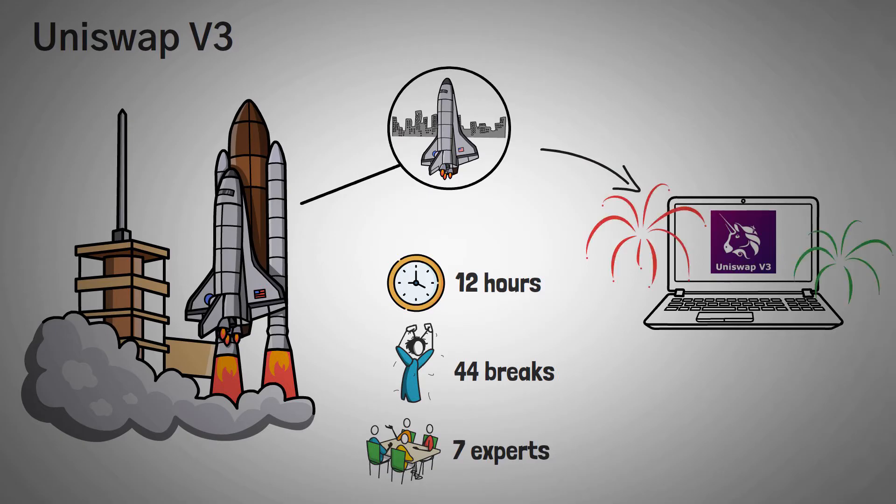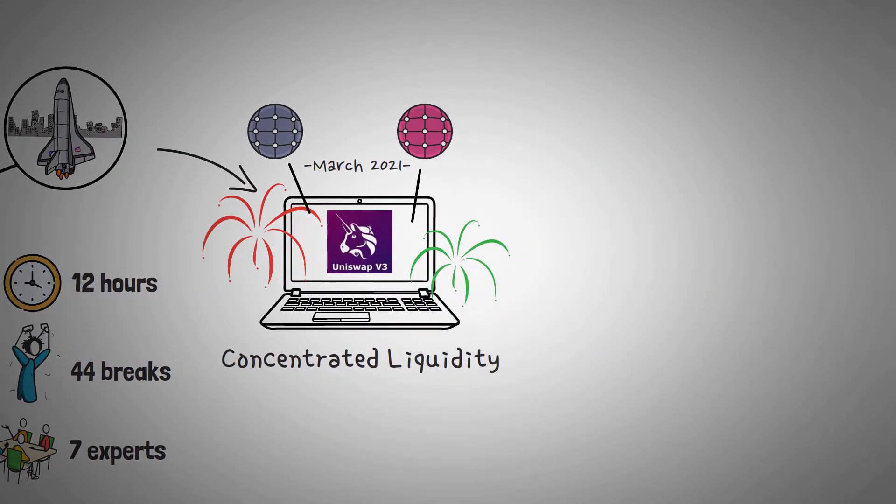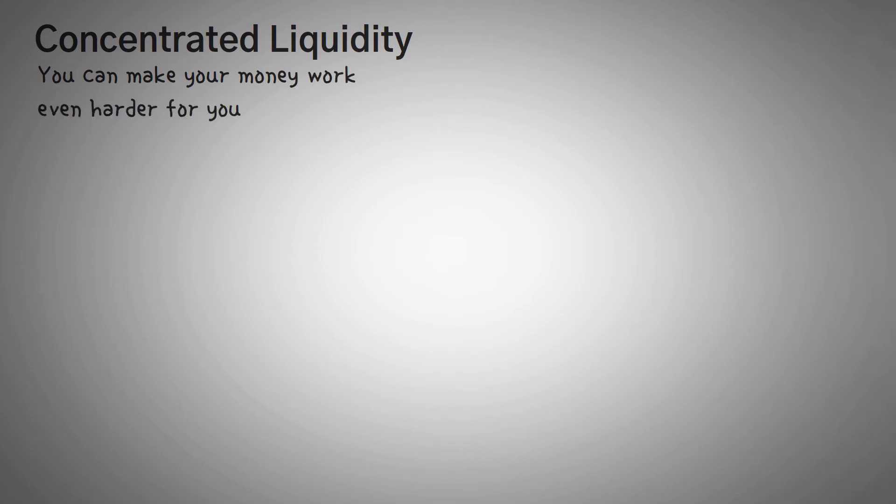First off, Uniswap V3 was launched around March of 2021 on both the Ethereum mainnet as well as the Optimism mainnet, which if you don't know what Optimism is, it's a secondary network used to scale Ethereum. Now, just like V2 had one big update, the big update in V3 is called concentrated liquidity. Now, liquidity, if you don't already know, basically means money that you provide to someone else so that they can use it for something. In this case, it's trading. Let's go over concentrated liquidity.